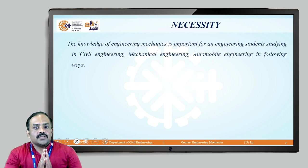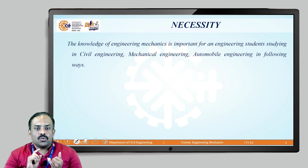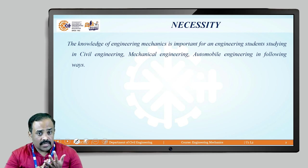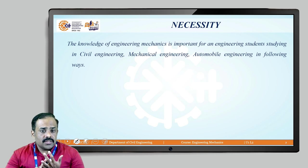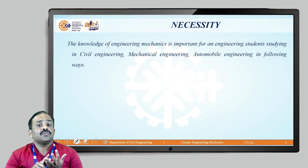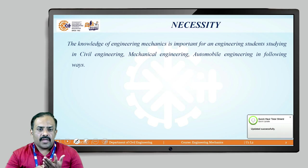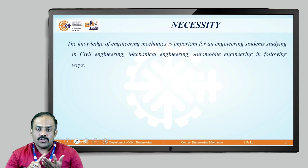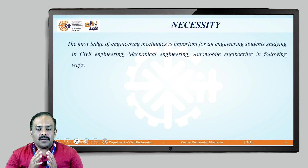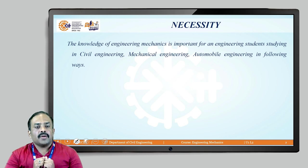Why only core branches? Because the loads are applied in these branches. In civil engineering, we come across beams, columns, and slabs on which forces are applied. For mechanical engineering, the mechanisms or machines in which forces are used require engineering mechanics. For automobile engineering, similarly, the machines in which forces are used in automobile engineering also require this subject.